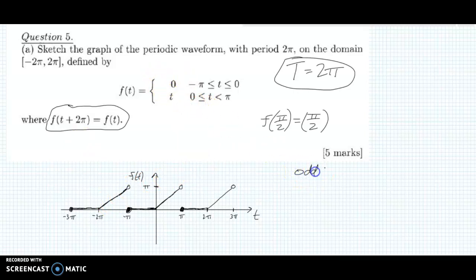Now it will be useful to determine whether this graph is odd, is it odd or is it even, or the other possibility is it neither, neither odd nor even. If it's even, it's going to be symmetric about the y-axis, and it's clearly not, because if it was, if this was symmetric about that line, that line would be going out here as well, but it's not.